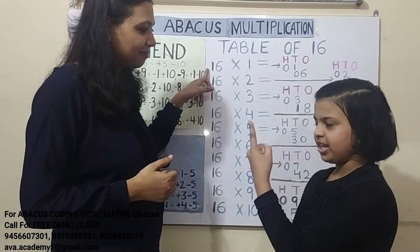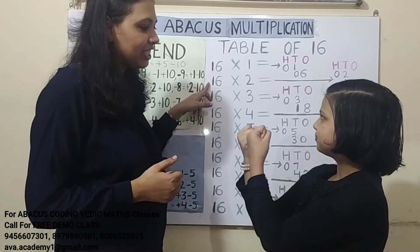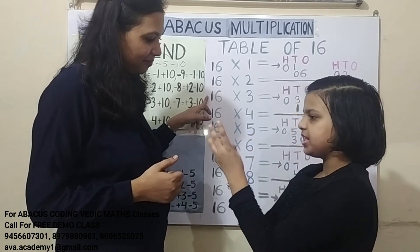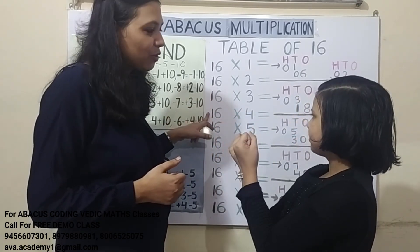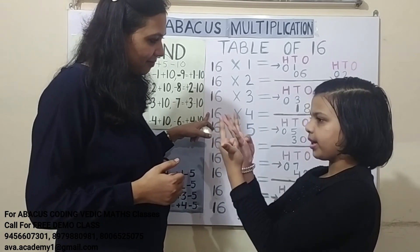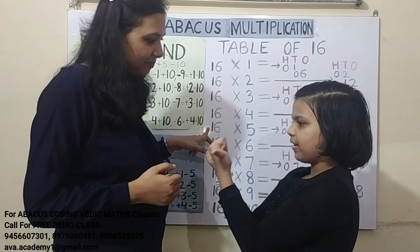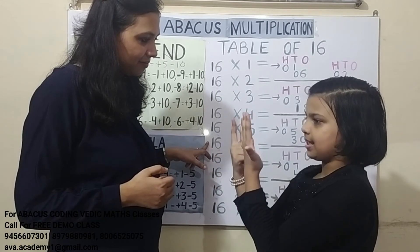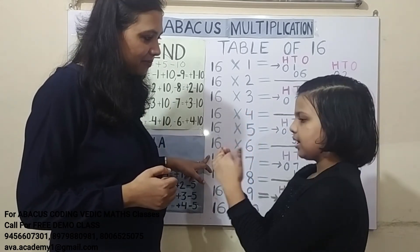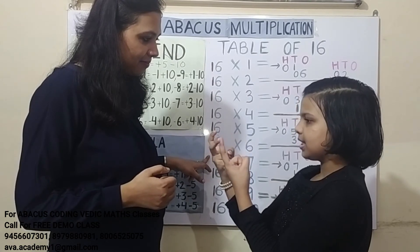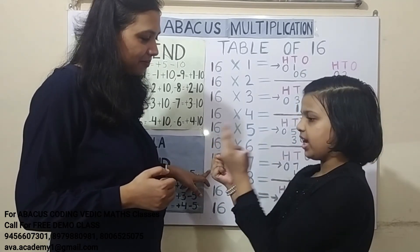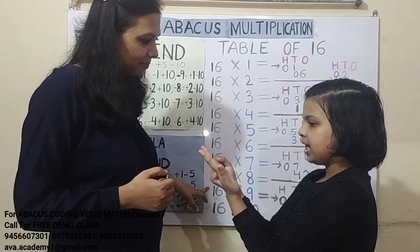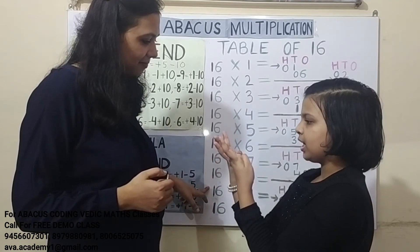16 ones are — 1 one's are 1, 1 six's are 6, answer is 16. 16 twos are — 1 two's are 2, 6 two's are 12, answer is 32. 16 threes are — 1 three's are 3, 6 three's are 18, answer is 48. 16 fours are — 1 four's are 4, 6 four's are 24, answer is 64. 16 fives are — 1 five's are 5, 6 five's are 30, answer is 80. 16 sixes are — 1 six's are 6, 6 six's are 36, answer is 96. 16 sevens are — 1 seven's are 7, 6 seven's are 42, answer is 112. 16 eights are — 1 eight's are 8, 6 eight's are 48, answer is 128. 16 nines are — 1 nine's are 9, 6 nine's are 54, answer is 144.